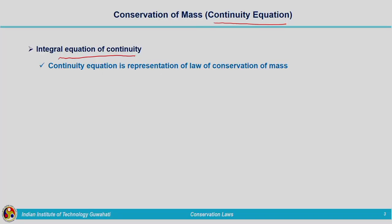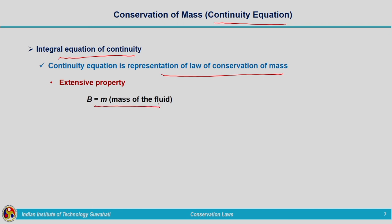Here we are going to make use of Reynolds transport theorem. What continuity equation is expressing? It is the representation of law of conservation of mass. When we are dealing with this, we need to consider the extensive property. Extensive property is nothing but mass of the fluid, because we have derived the Reynolds transport theorem for extensive property and it is applicable to the extensive property. Extensive property is the property which is dependent on the mass. Here, while deriving these conservation laws, we will consider different extensive properties. For example, in the case of continuity equation or mass conservation equation, our extensive property is mass of the fluid.